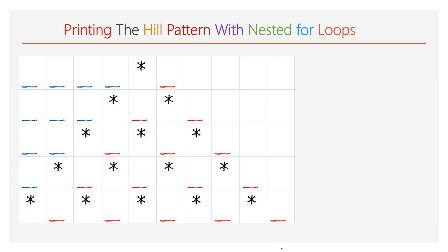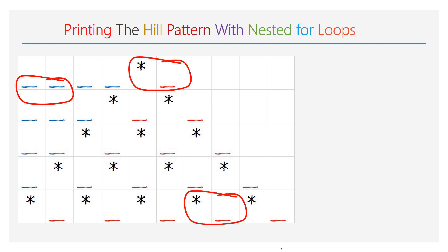We will summarize the given pattern. Between each underscore there is no space. After a star, there is a space. This we need to remember when we are writing the code.